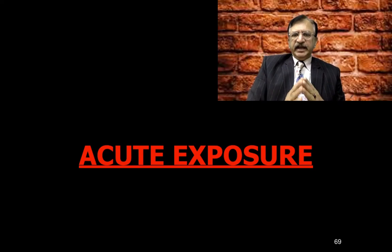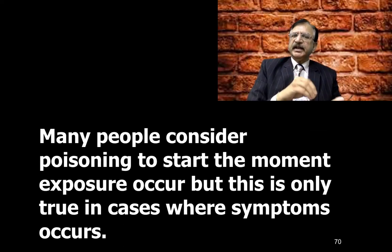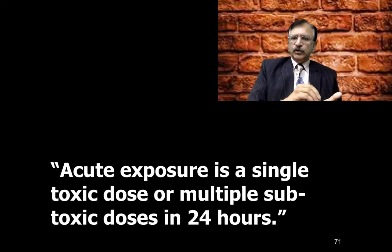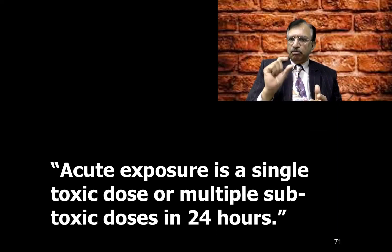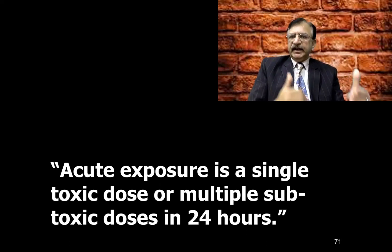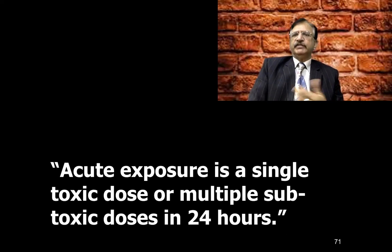Regarding acute exposure: many people consider poisoning to start immediately at the moment of exposure, but this is only true in cases where symptoms start immediately upon administration — not in every case. Acute exposure is defined as a single toxic dose, or multiple sub-toxic doses within 24 hours or a short period of time. If multiple small doses are administered over a short period until they produce a toxic effect, this also constitutes acute exposure.